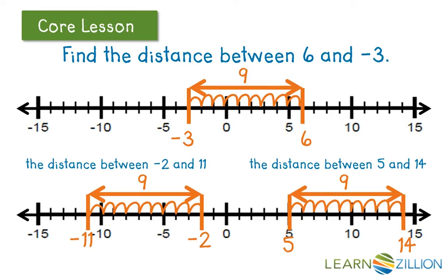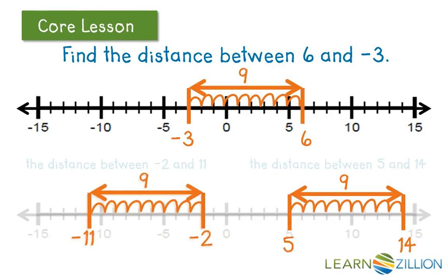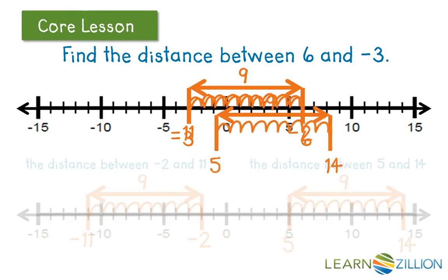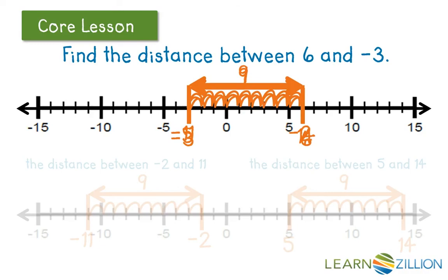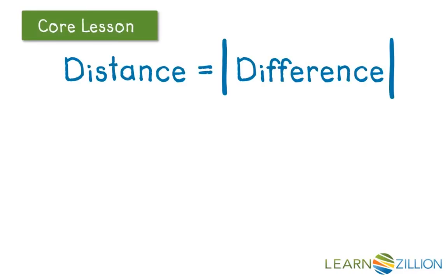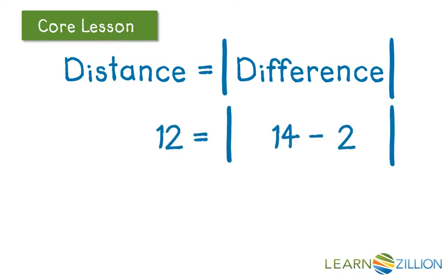If we look at all of our examples — some with numbers greater than 0, some with negative numbers less than 0, and the last example with one negative and one positive number — it doesn't matter where these numbers are on the number line. The distance is always going to be positive. These problems were chosen because they all have a distance of 9. If we're looking at difference and distance, the difference isn't always positive, but if we take the absolute value of the difference, we will have the distance between them.